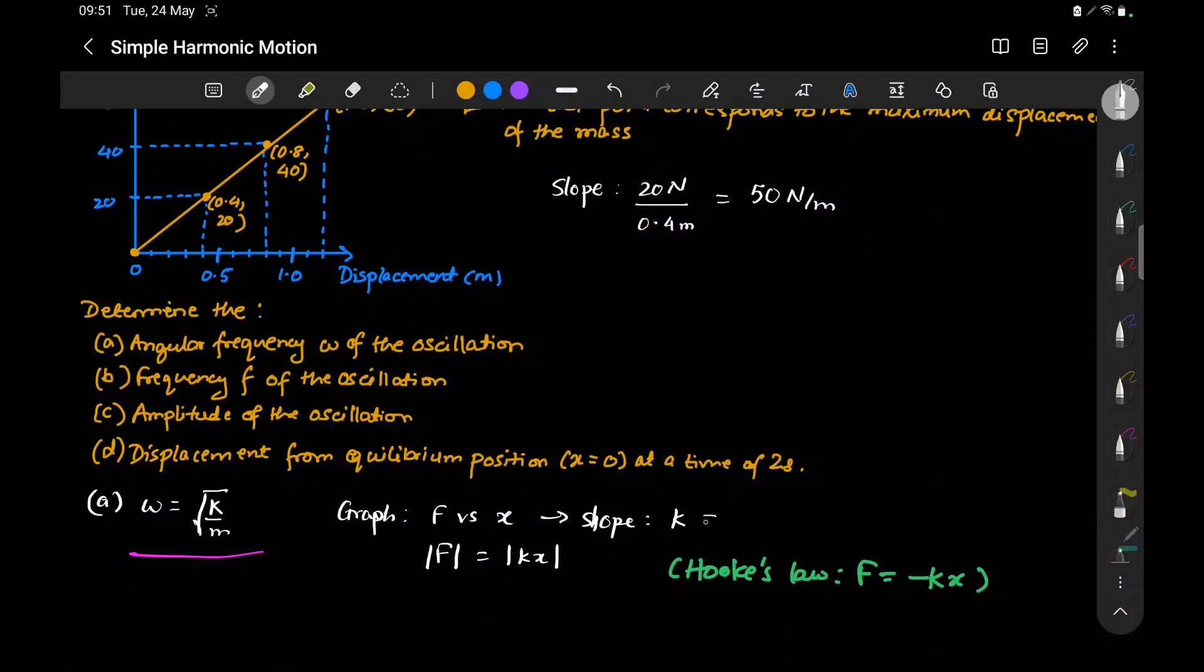Slope is k, so k = 50 N/m. Plugging in the value: ω = √(50/0.5) = 10 rad/s. This is the angular frequency.